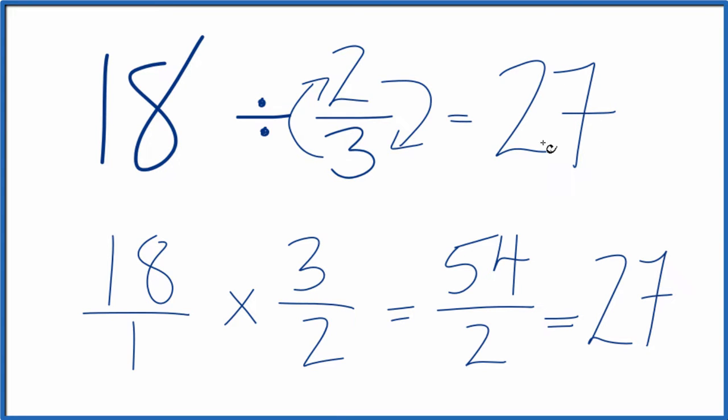If you multiply 27 times 2 thirds, you get 18. So we did this correctly.